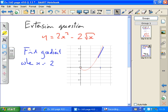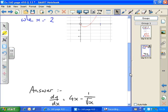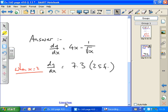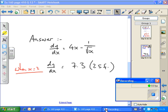The solution follows. So there's the differential function, 4x minus 1 over root x. Substituting x equals 2, you should get a differential of 7.3 to 2 significant figures. Thank you.